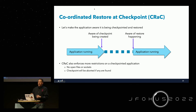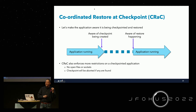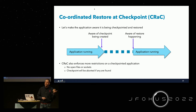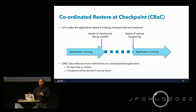CRaC enforces additional restrictions to make checkpointing safe. When making a snapshot, if there are any open file descriptors or open sockets or network connections, CRaC will not allow the snapshot to proceed — you must tidy up all of those things first. Sockets and files must be closed before a snapshot can be taken; otherwise, the checkpoint will be aborted.